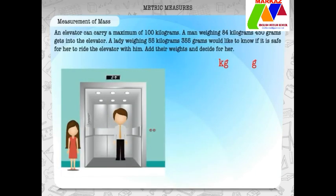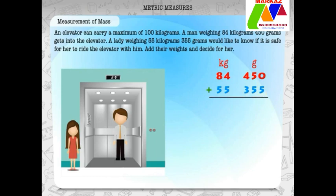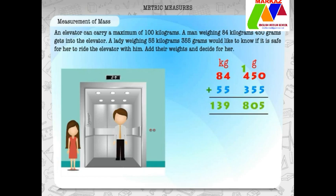When we add weights, we use the placeholders kilogram and gram. An elevator can carry a maximum of 100 kilograms. A man weighing 84 kilograms 450 grams gets into the elevator. A lady weighing 55 kilograms 355 grams would like to know if it is safe for her to ride the elevator with him. Adding 84 kilograms 450 grams and 55 kilograms 355 grams, we get 139 kilograms 805 grams. Oh no! The total weight is 139 kilograms 805 grams, which is more than 100 kilograms. The lady must not enter the elevator.